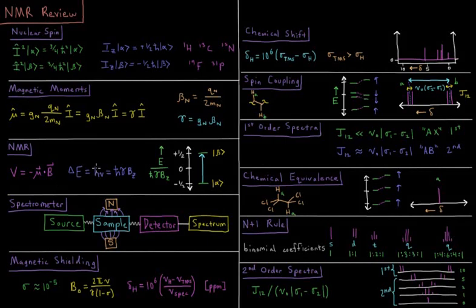So the change in energy we get when we absorb some photon, which is typically going to be in the radio frequency range, is going to be h-nu equals h-bar gamma B-z.